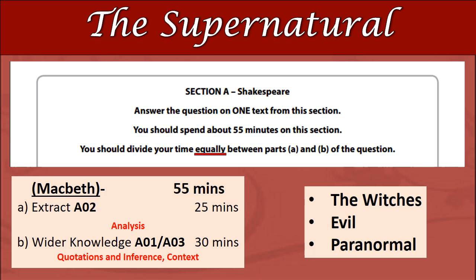As you can see on the left-hand side at the bottom here, the first part, Question A, is extract based. You'll be given a small part of the text and asked to focus very closely on language and structure devices used by Shakespeare to convey a certain theme, or perhaps focusing on the behaviour of a certain character. So you are being tested on your AO2 there — your analysis. Part B is slightly different. What they want you to do is demonstrate your wider knowledge of the play, because you're not only having to recall quotations and make judgments using inference, but also linking in the historical social context of Shakespeare's time, and of Dark Ages Scotland as well.